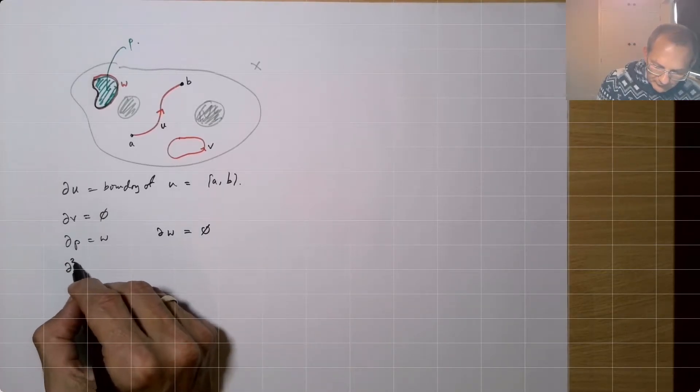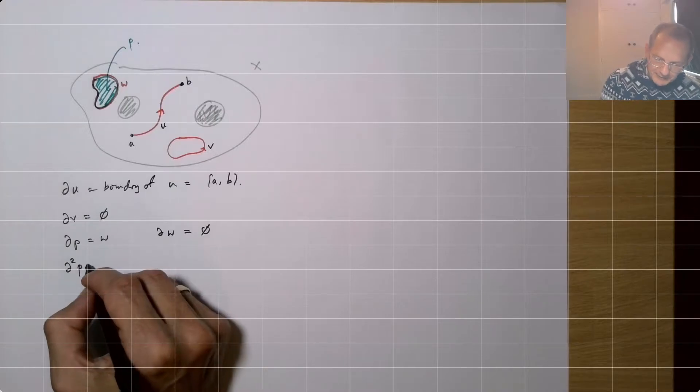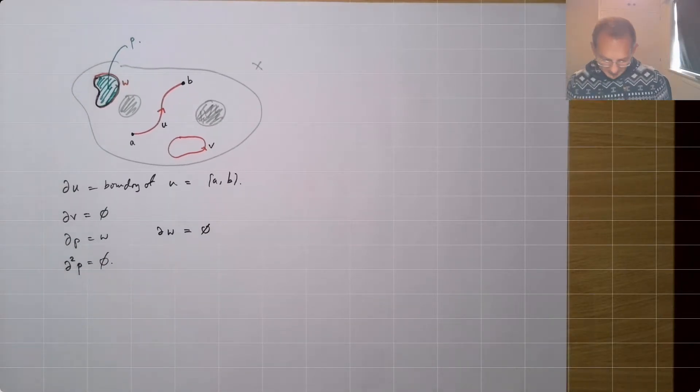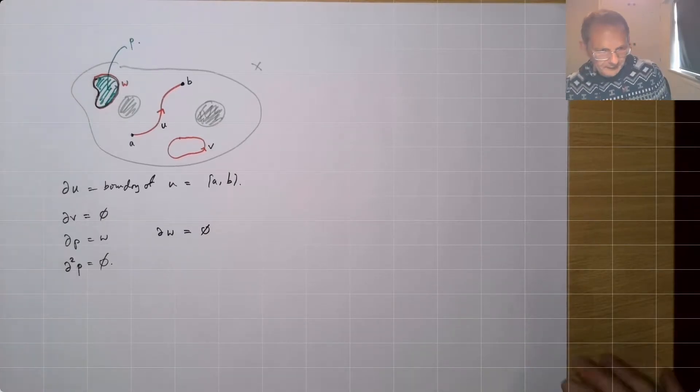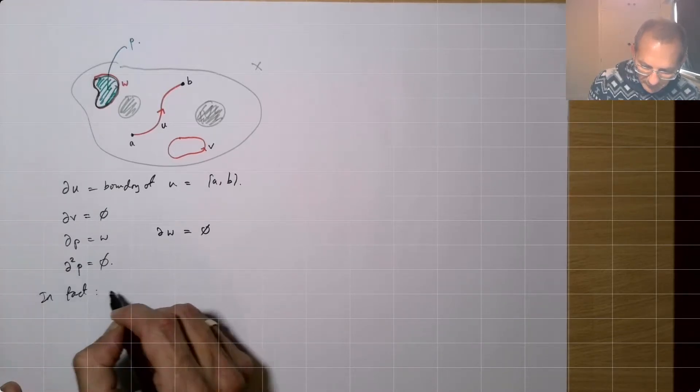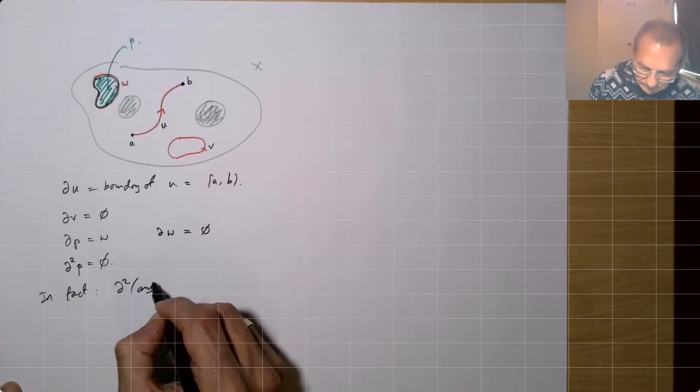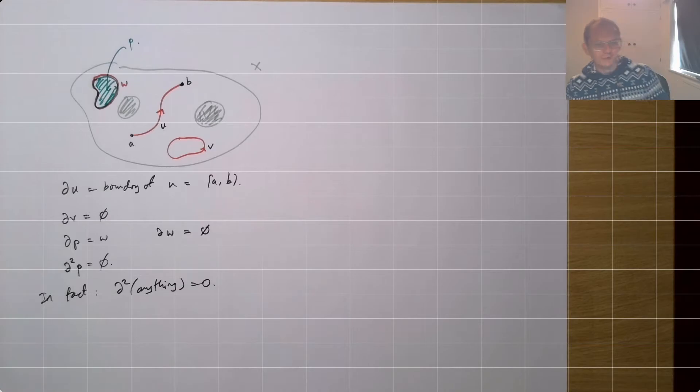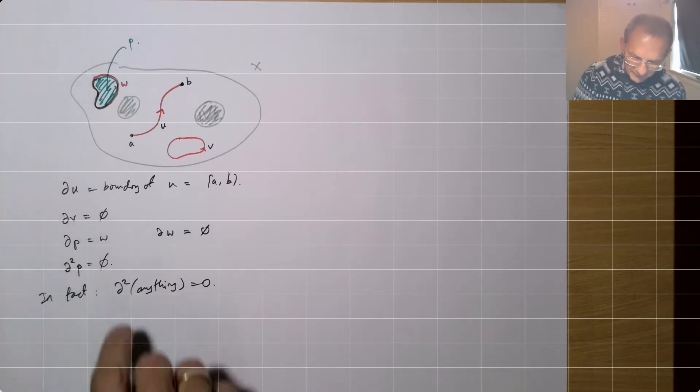And so like D squared, the boundary of the boundary of P, that's empty. And this is a common feature. I mean, we're not really given precise enough definitions to prove this yet, but when we do get around to providing precise definitions, it's going to work out like this. D squared of anything is going to be empty. It was zero.